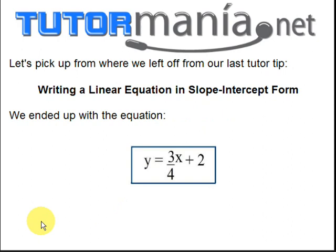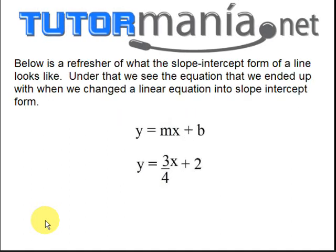Let's pick up where we left off from our last tutor tip, writing a linear equation in slope-intercept form. We ended up with the equation y equals 3 fourths x plus 2. Below is a refresher of what the slope-intercept form of a line looks like. Under that, we see the equation that we ended up with when we changed a linear equation into slope-intercept form.